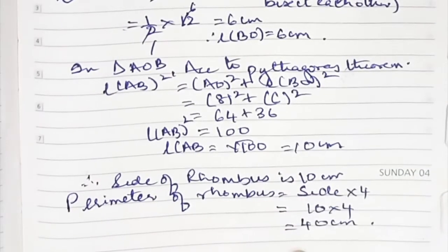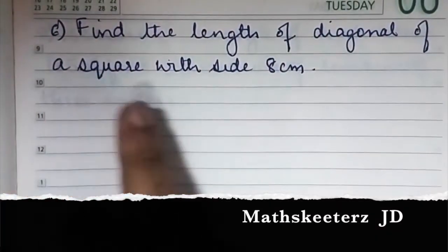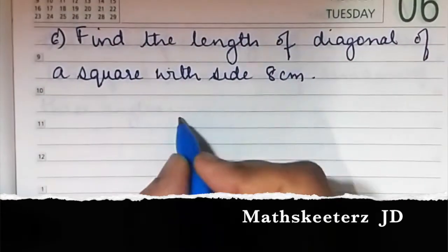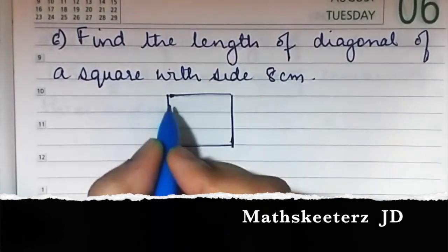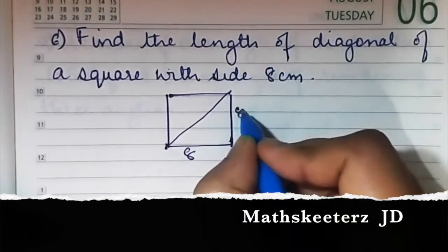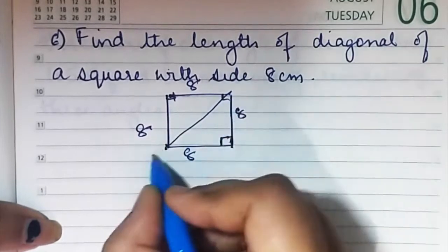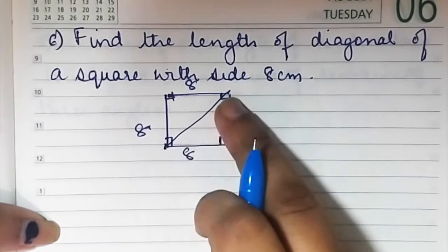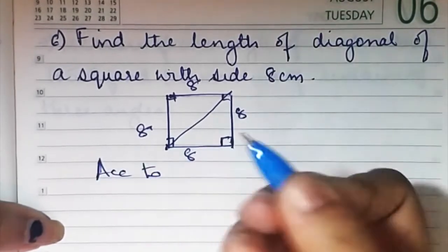Sum number 6: Find the length of the diagonal of a square if the side is 8 centimeters. A square looks like this — you have to find the diagonal. Side is 8, and since it's a square all sides are 8. All angles are 90 degrees. The diagonal is the hypotenuse because this angle is 90 degrees, so we use Pythagoras theorem to find the hypotenuse.